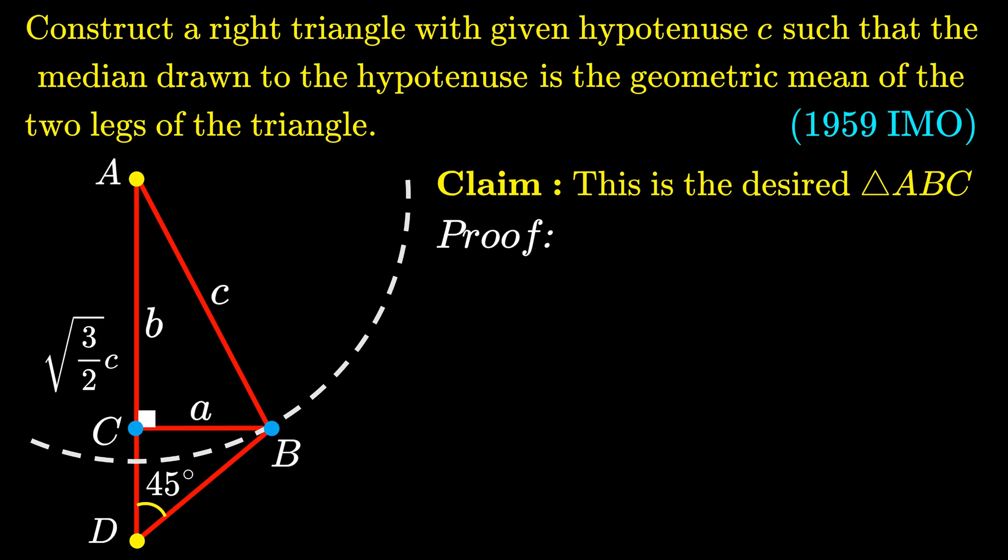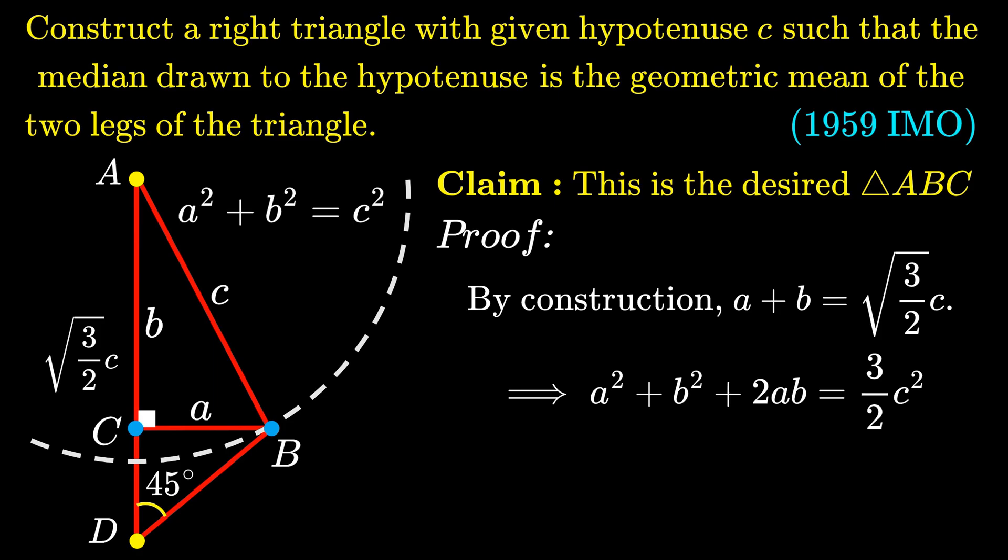By our construction, A + B = √(3/2) · C. Squaring both sides, we get A² + B² + 2AB = (3/2)C². Because the triangle ABC we constructed is a right-angled triangle, A² + B² = C².